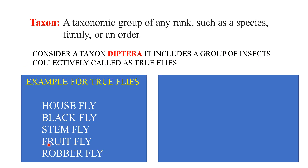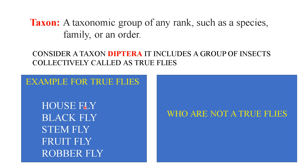Let's see this concept with an example. Consider the taxon Diptera. It includes a group of insects that are collectively called true flies. Examples of true flies are: house fly, black fly, stem fly, fruit fly, and robber fly. While writing these common names, you must provide a gap between the two words — for example, 'house fly', 'black fly', 'stem fly', and so on.